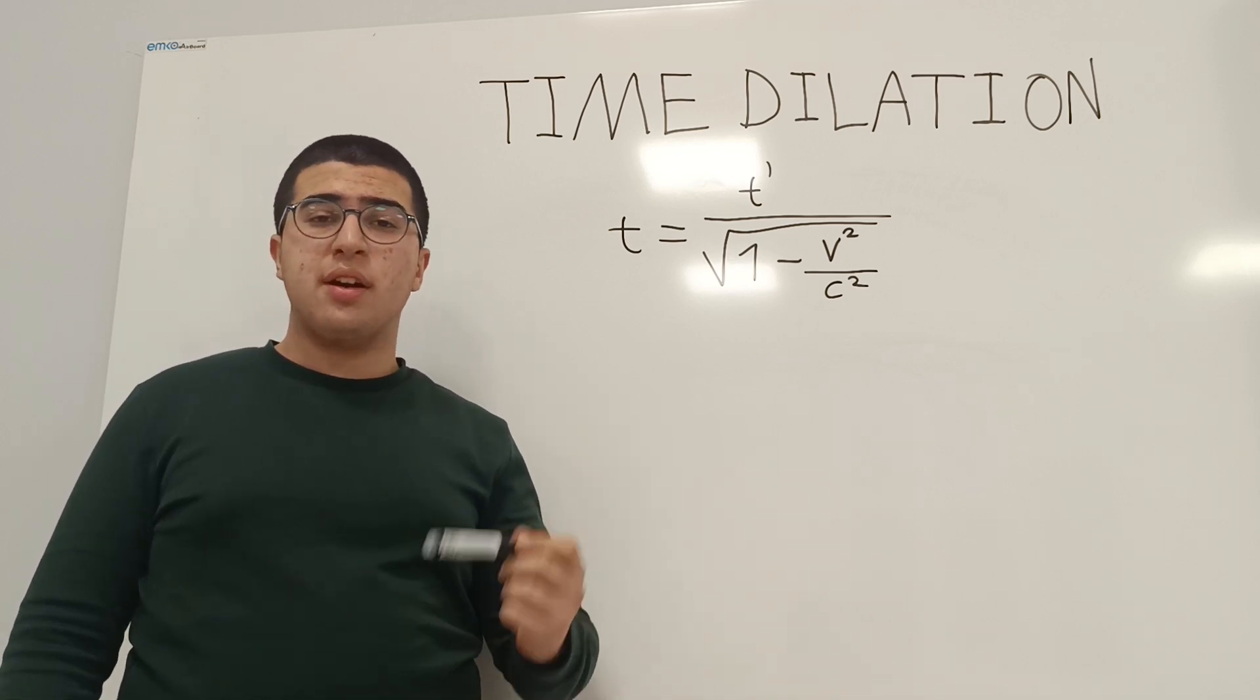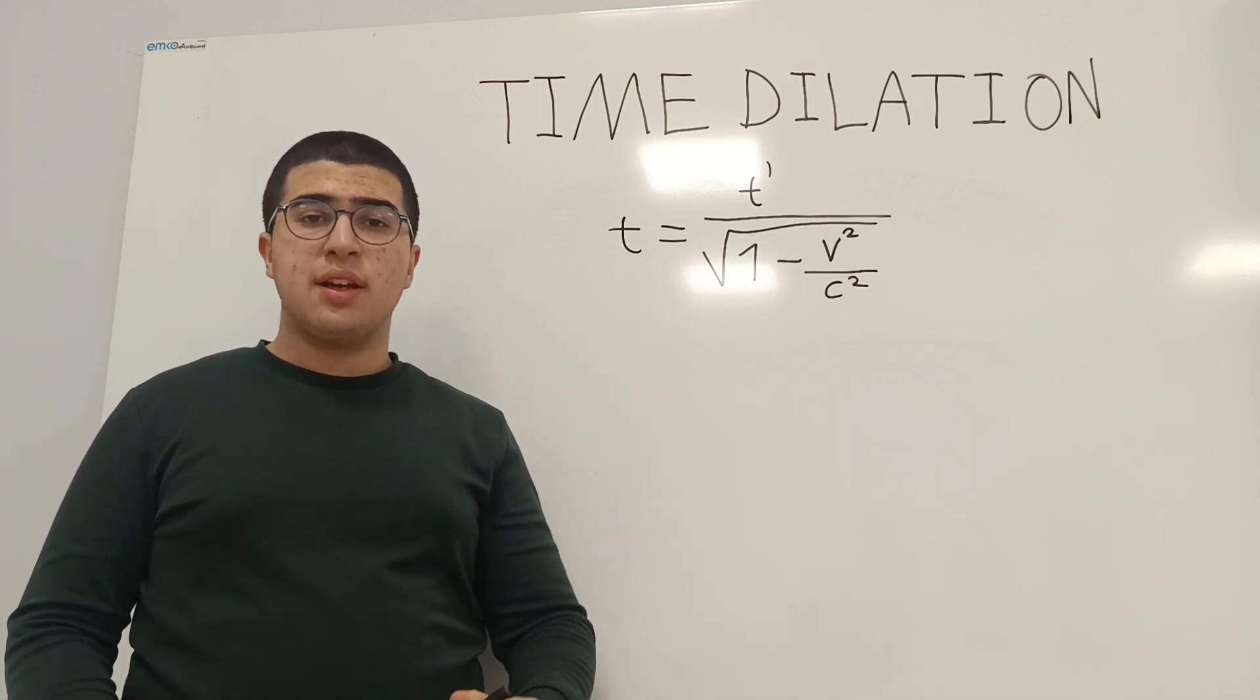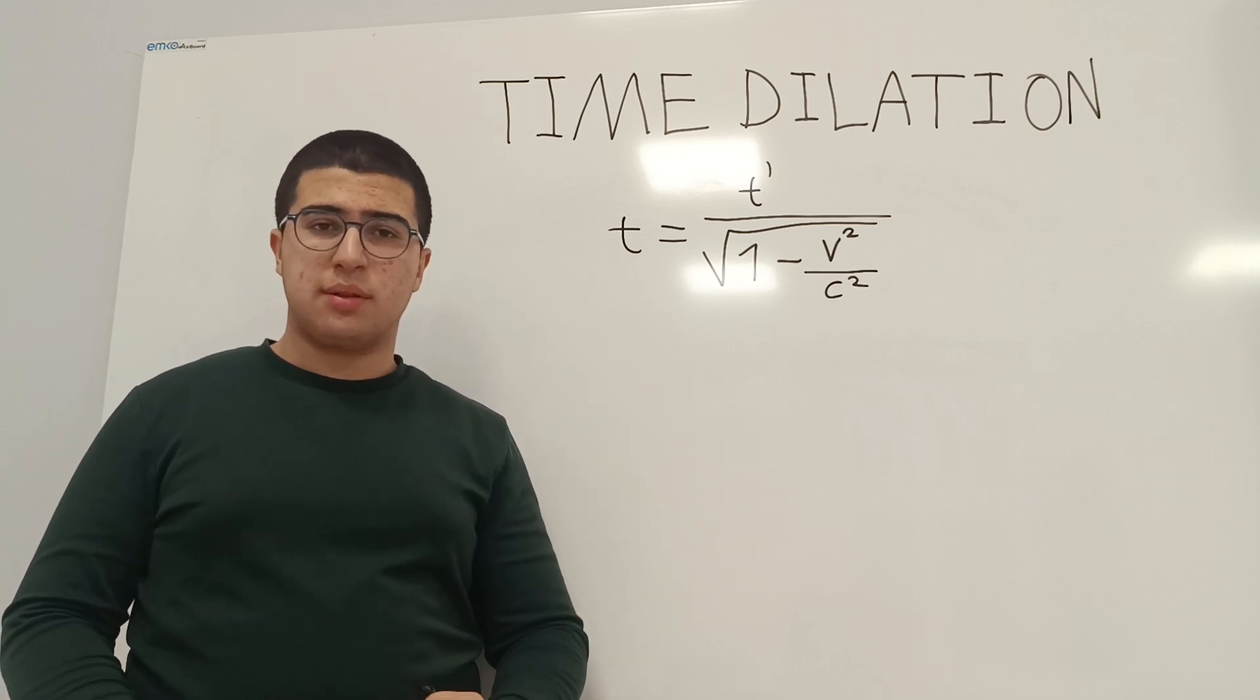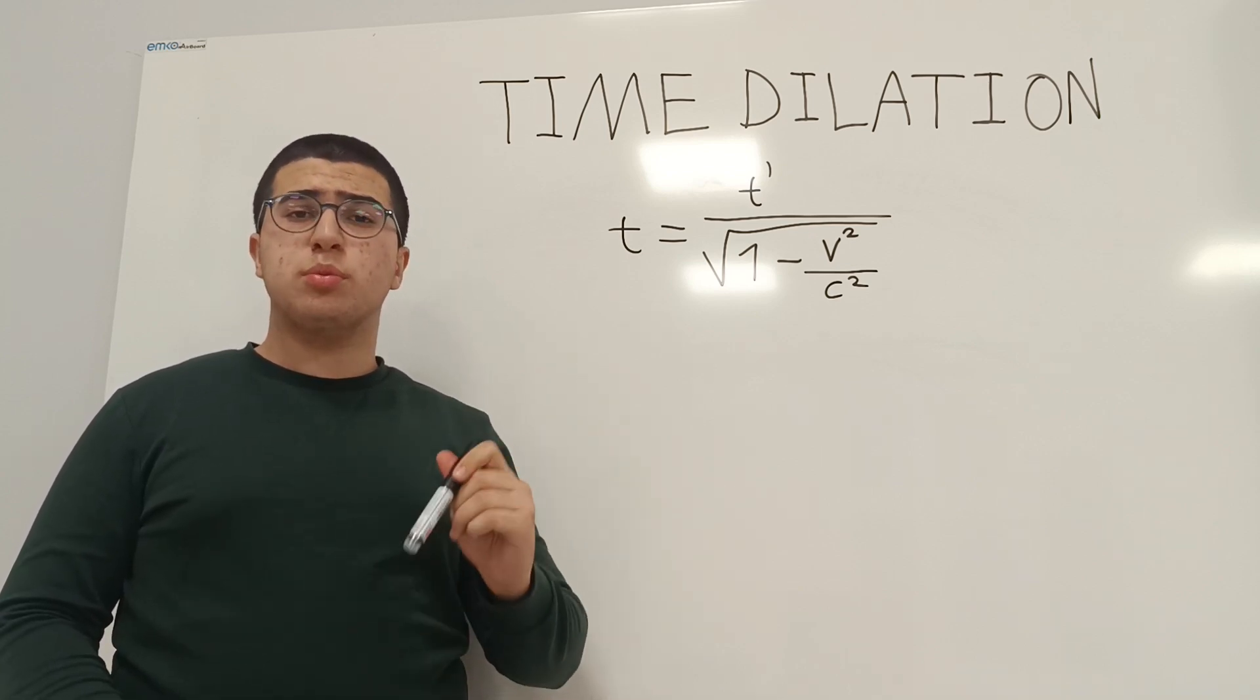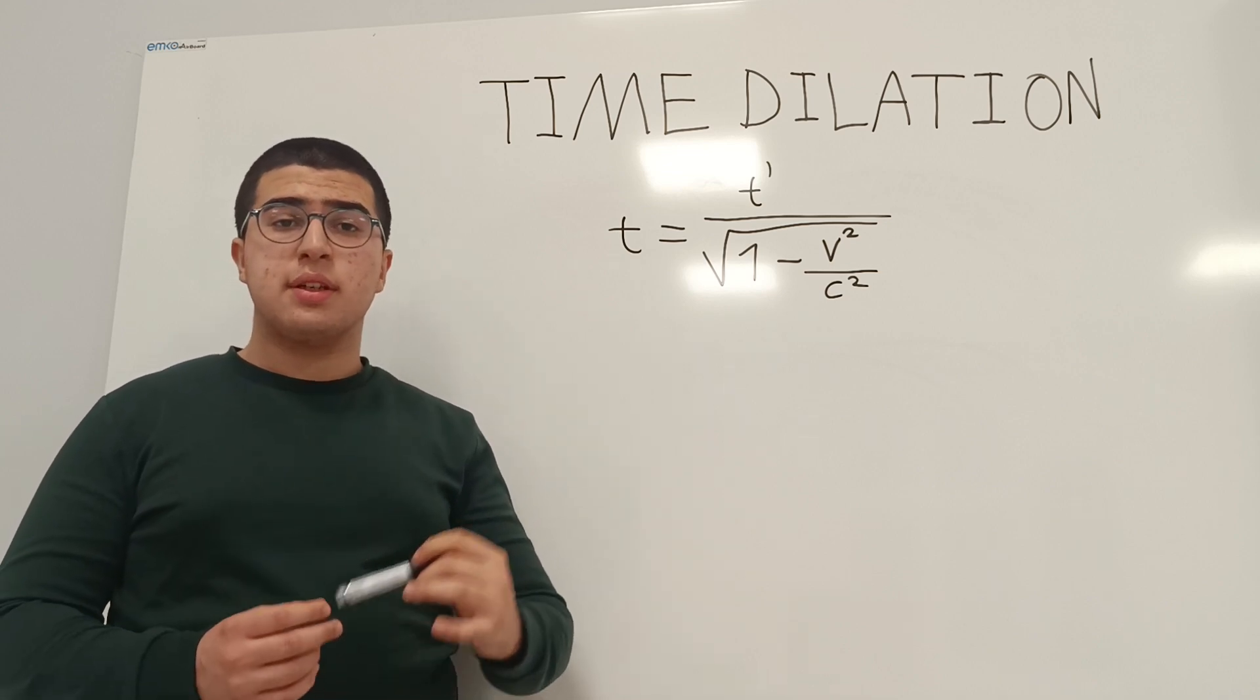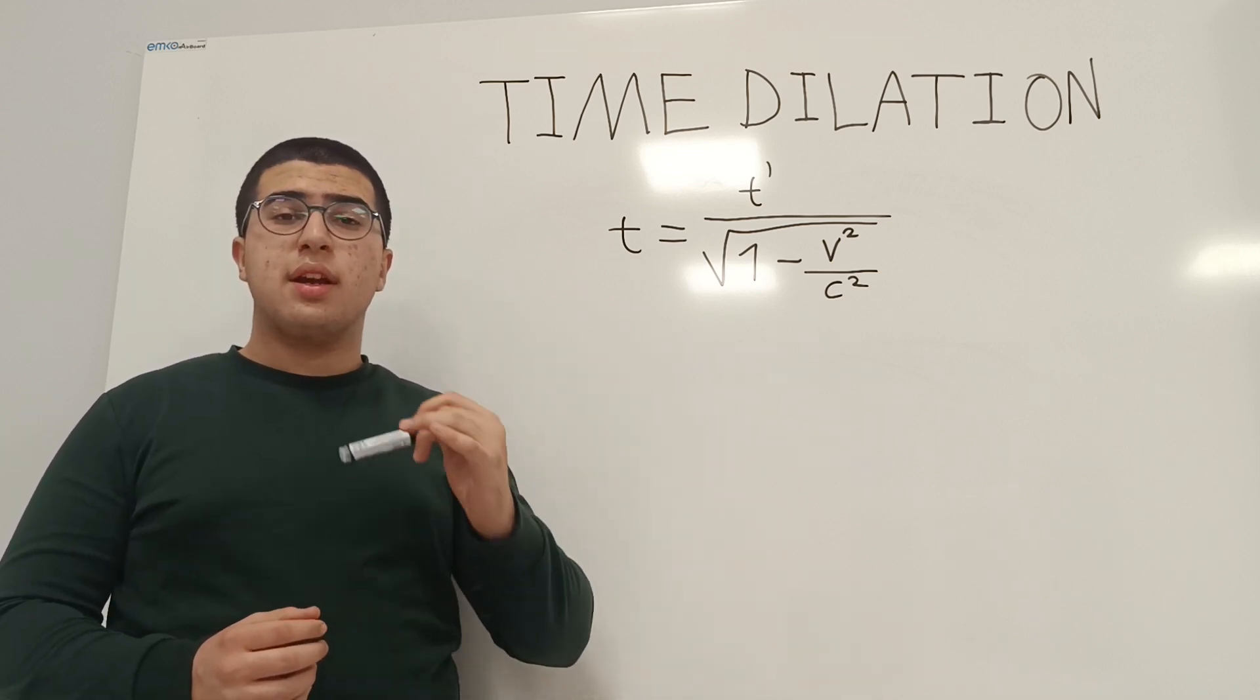Time dilation is a phenomenon that was explained by Albert Einstein in his special theory of relativity. And it claims that a moving observer experiences time slower relative to an inertial reference frame.